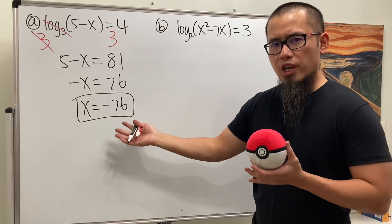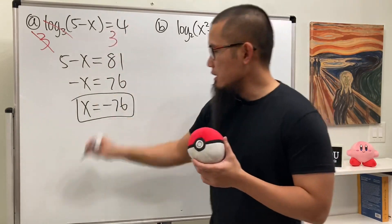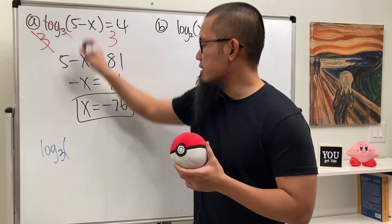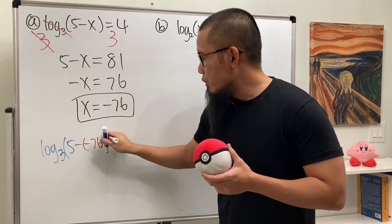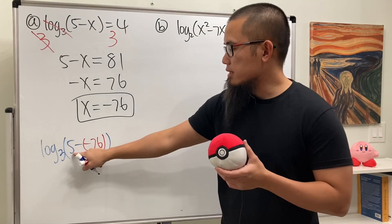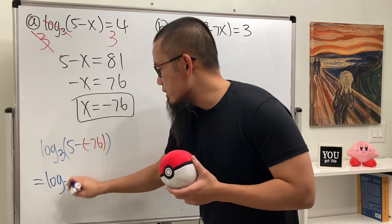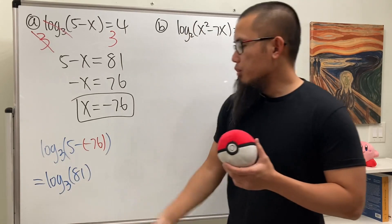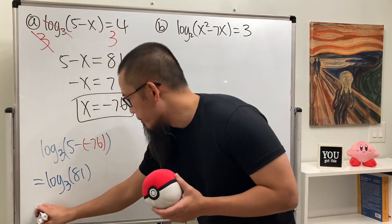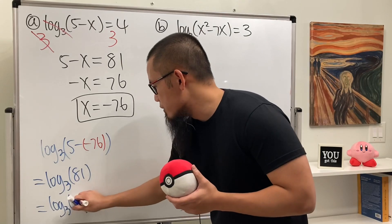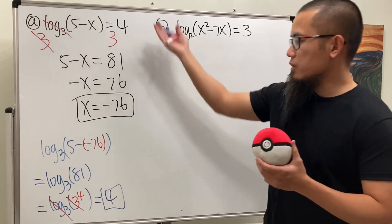x is negative — is this okay? Yes, because when we plug in negative 76 back here, we see we have log base 3 of (5 minus negative 76), which is actually 5 plus 76, equal to 81. So this is just log base 3 of 81, which is log base 3 of 3 to the fourth power. These cancel, and we do end up with 4. So this checks.